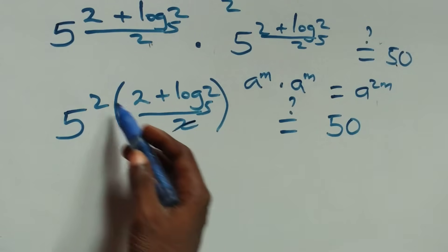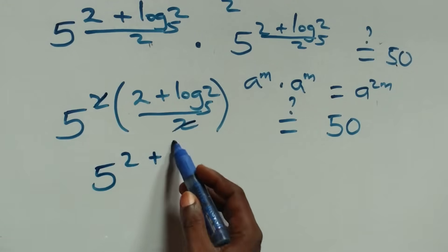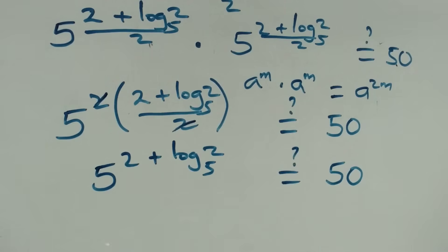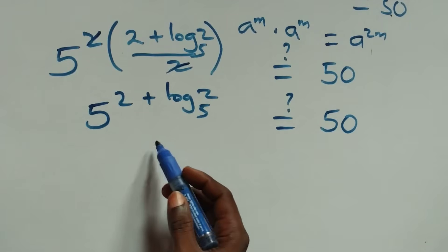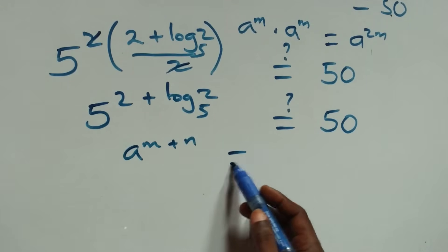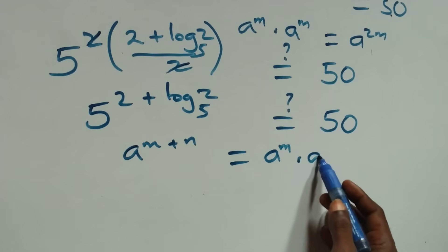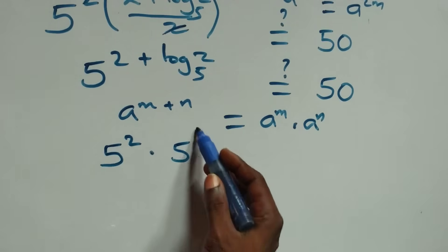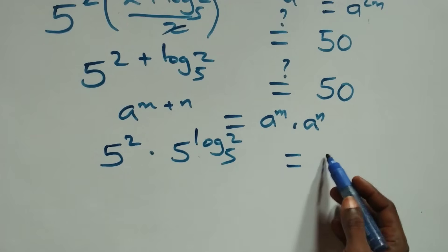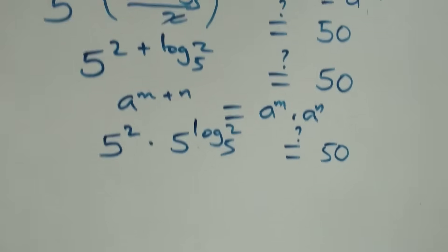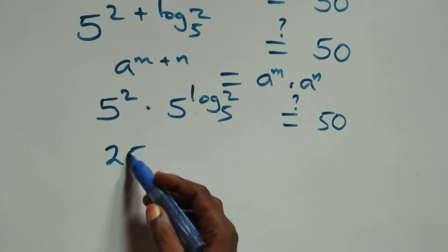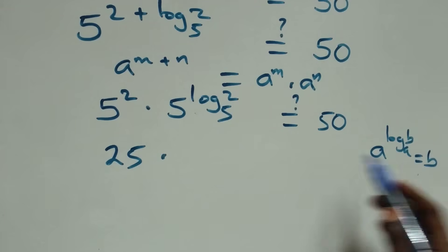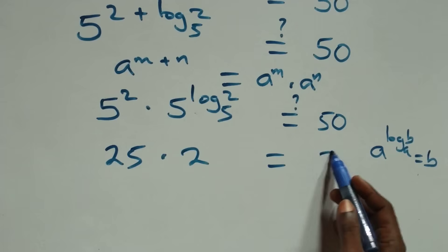Here this power multiplies, and 2 cancels each other. We have 5 raised to power 2 plus log₅2, which equals 50. Then we apply the law of indices: a raised to power m plus n is the same thing as a raised to power m times a raised to power n. This becomes 5 squared times 5 raised to power log₅2, equals 50. Now 5 squared is 25. Then, following the rule a raised to power log b to base a equals b, here we have 2.